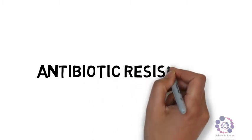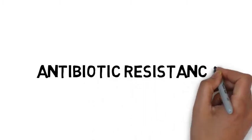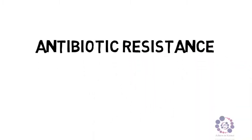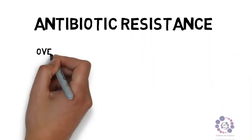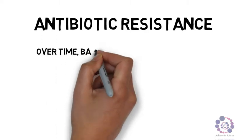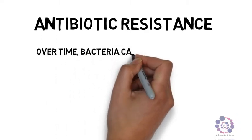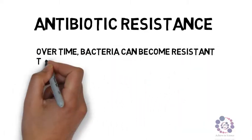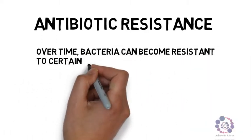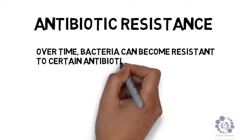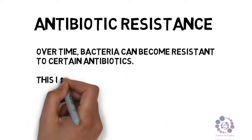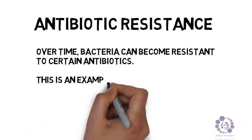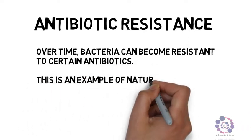Antibiotic resistance then arises where over time bacteria can become resistant to certain antibiotics. This is an example of what we call natural selection — the survival of the fittest.